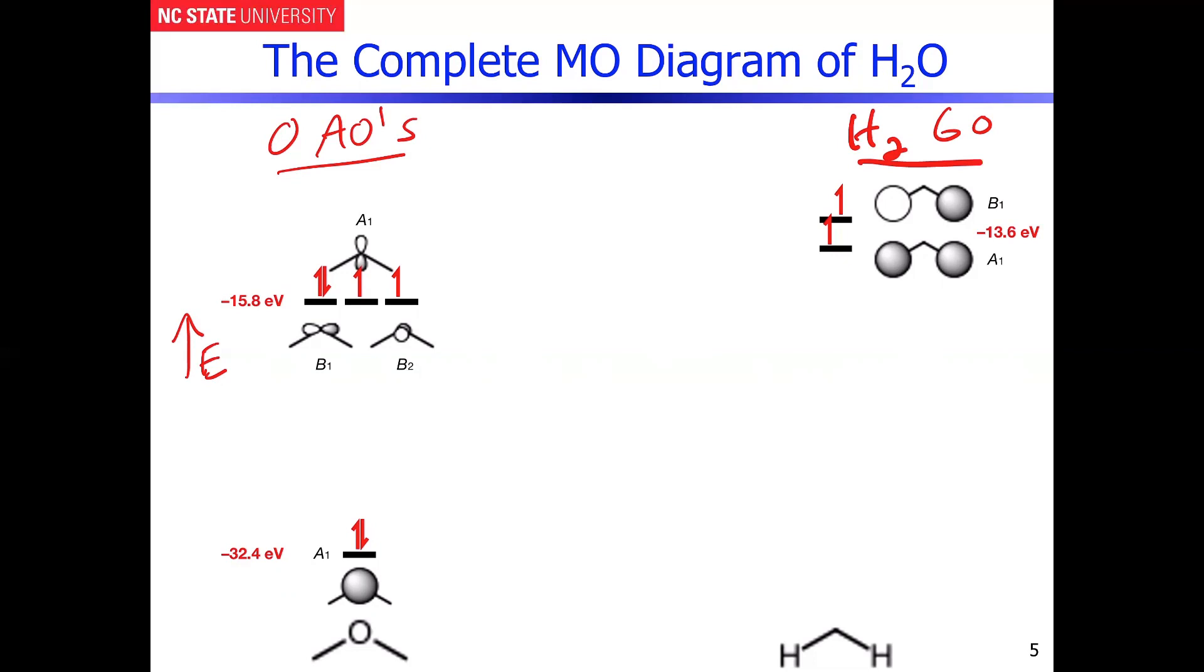So remember what we're going to do. We have to correlate the symmetries as well as the energy. So if you look at the first symmetry correlation here, what you wind up with is you get an in-phase combination. But as we said before, because the energetic differences are so big, this orbital is effectively non-bonding.